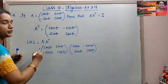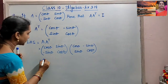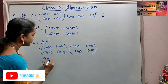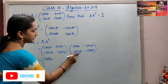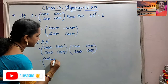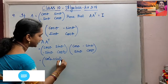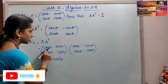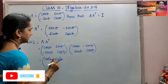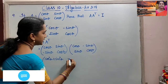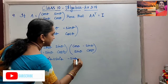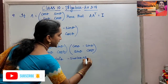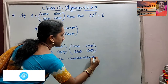Now we find the product. For the first row: cos theta × cos theta = cos² theta, and sin theta × sin theta = sin² theta. Then cos theta × (-sin theta) = -sin theta cos theta, and sin theta × cos theta = sin theta cos theta.